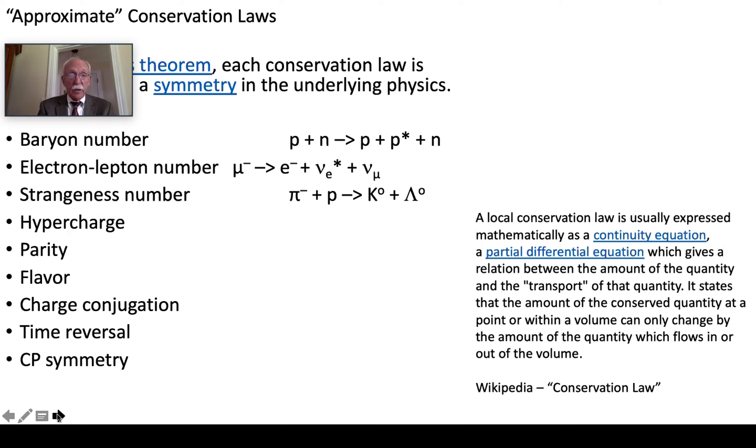Here are the approximate conservation laws. Baryon number. Well that works when you're dealing with strong forces but not with weak forces. Electron lepton number and then all the others that go with it. The muon lepton number and the tau lepton number. Those are all individuals.